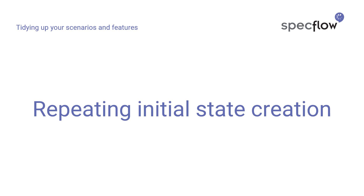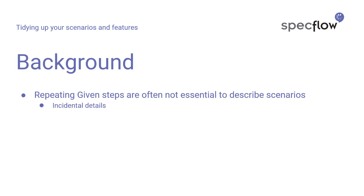Another situation where we might want to clean up our SpecFlow feature files is when you have several scenarios in a feature that describe different parts of the behavior, yet they all share the same initial state. To deal with this and make your feature files more readable and easier to maintain, SpecFlow and the Gherkin syntax offer a background. You can use a background to specify repeating given steps which are incidental details — necessary before verifying behavior, but not essential to describing the behavior itself.